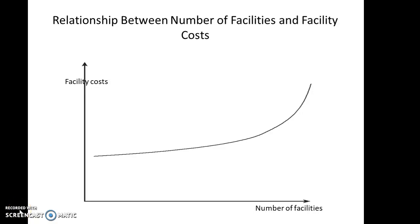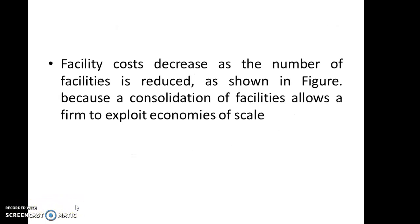Next, we see the relationship between number of facilities and facility cost. As shown in the graph, facility cost increases as you increase the number of facilities — the relationship is straightforward. If you want to reduce the facility cost, you must reduce the number of facilities, consolidating them in a single place or very few places. This exploits economies of scale: you procure products in bulk and keep stock in fewer locations.